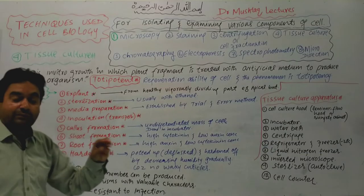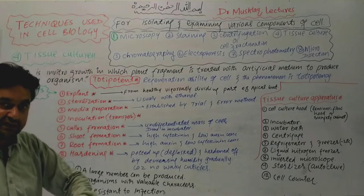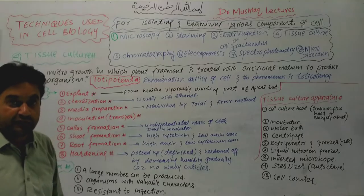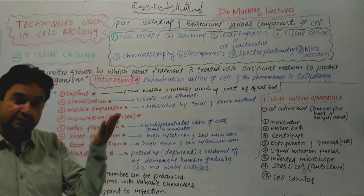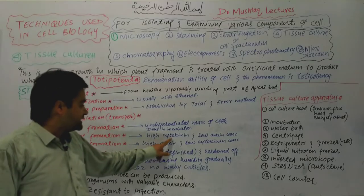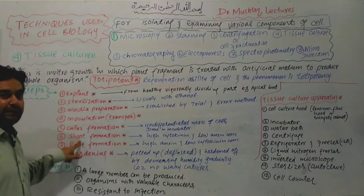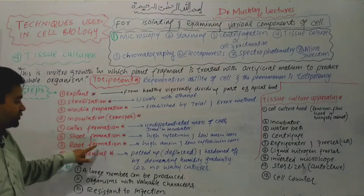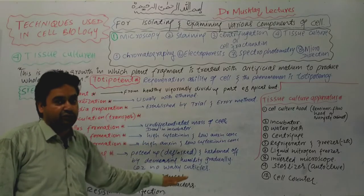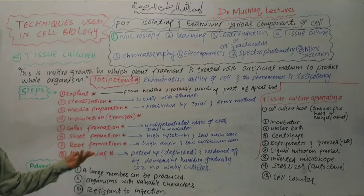To control whether shoots or roots form, you adjust the cytokinin-to-auxin ratio. Cytokinin promotes shoot formation and auxin promotes root formation. If you have a high concentration of cytokinin and low auxin, shoot formation occurs. High auxin and low cytokinin leads to root formation.